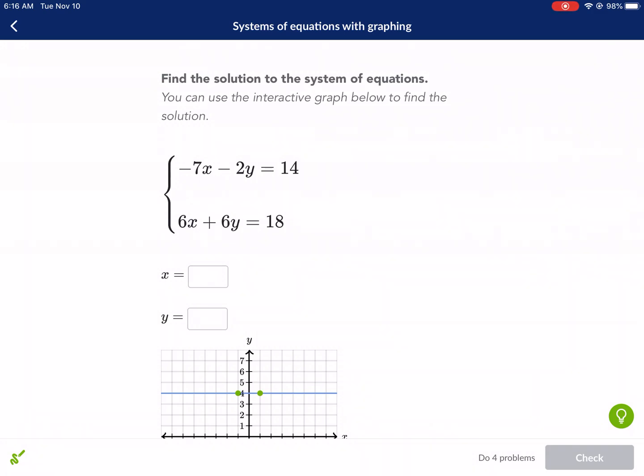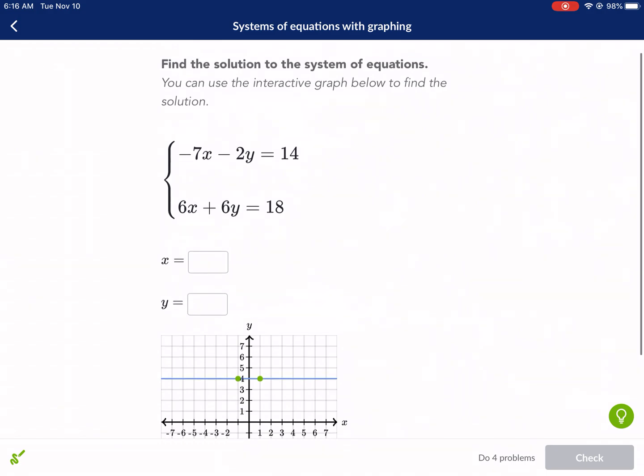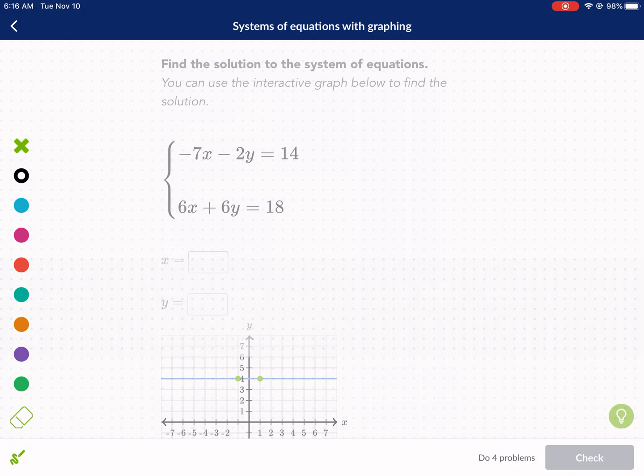Welcome everyone to a Khan Academy tutorial. Today we are going to be doing systems of equations with graphing. So we have two equations here that we are given. They are both in standard form. That means x and y are on the same side of the equal sign and there's no fraction coefficients. Now what do we do with systems of equations? What do we do with standard form? I will explain.